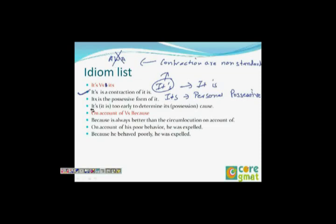Here is an example combining both forms: 'It's too early to determine its cause' — where 'it's' is the contraction of 'it is,' and 'its' is the personal possessive form. This sentence demonstrates both usages clearly.